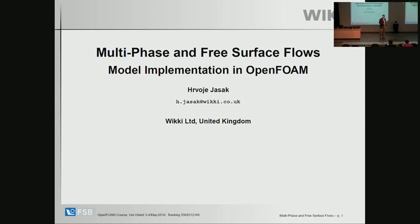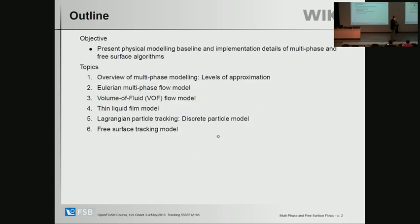So multiphase and free surface flows are getting more and more important in CFD today. We have been doing it for quite a long time, and the problem is that there is no one way of doing multiphase and free surface flow. So what I'm going to do in these slides is review some concepts of multiphase modeling with different levels of approximation, including Eulerian multiphase flow — also called Euler-Euler — Euler-Lagrange modeling, where the dispersed phase is modeled by Lagrangian particles being tracked through the mesh, and a specific case, the volume of fluid model, which basically takes into account two fluids with a discrete surface in between. We will also mention something about the thin liquid film and free surface tracking, because in naval hydrodynamics that one seems to be more and more interesting.